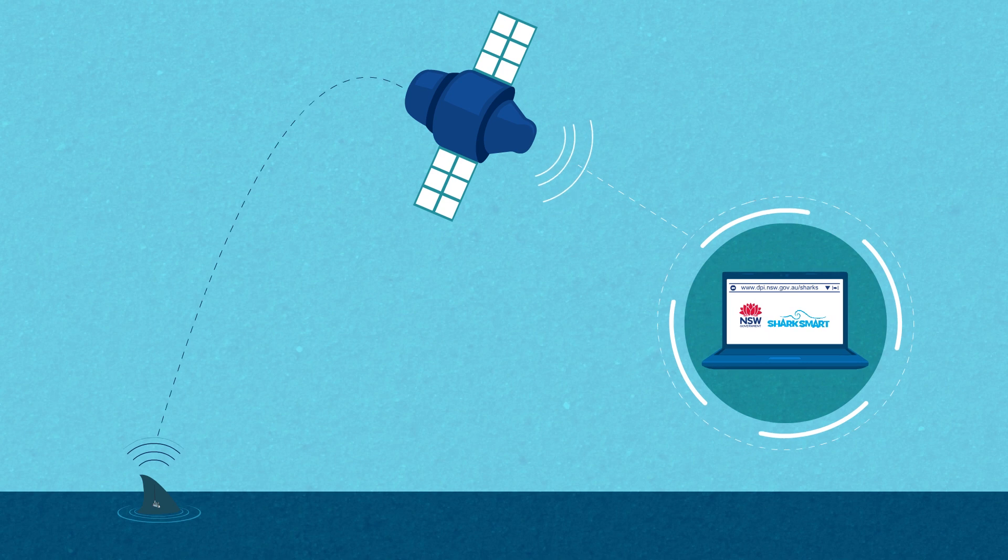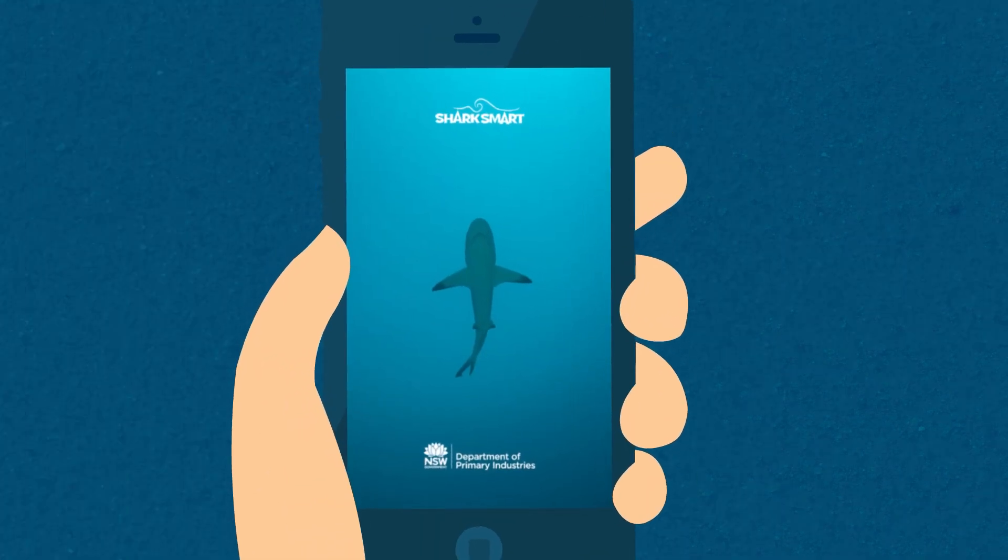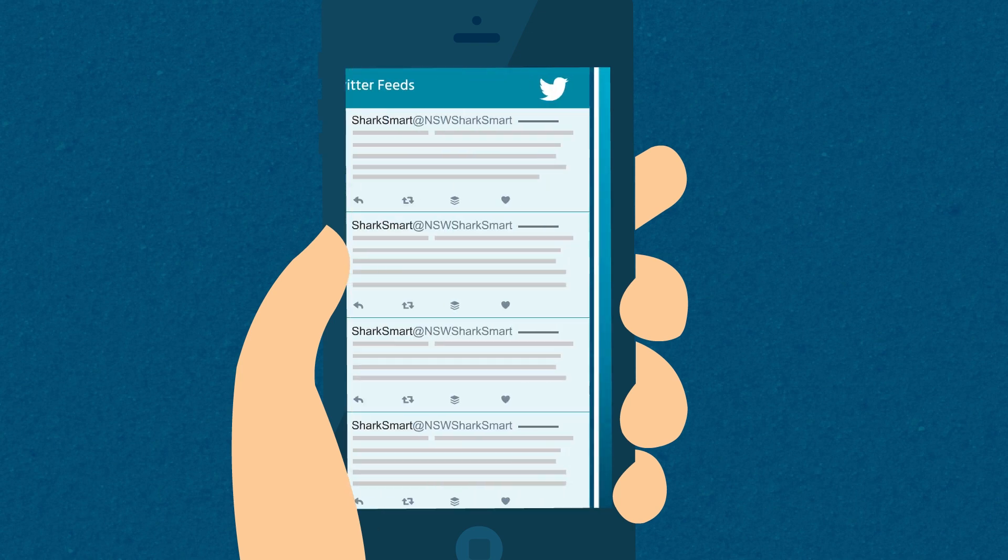The dorsal fin tag helps to track the shark using satellite technology, while the internal acoustic tag can be picked up on the network of shark listening stations across Australia. Acoustic alerts from the VR4G receivers are immediately broadcast via the SharkSmart app and at NSW SharkSmart on Twitter.